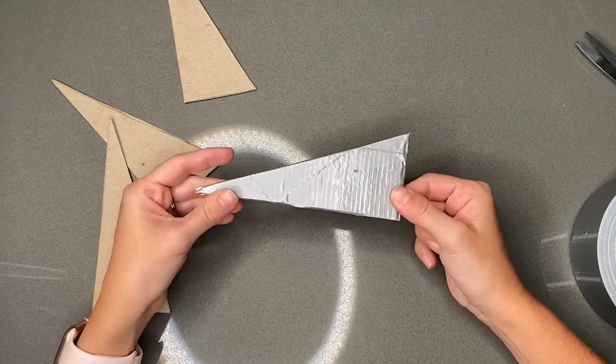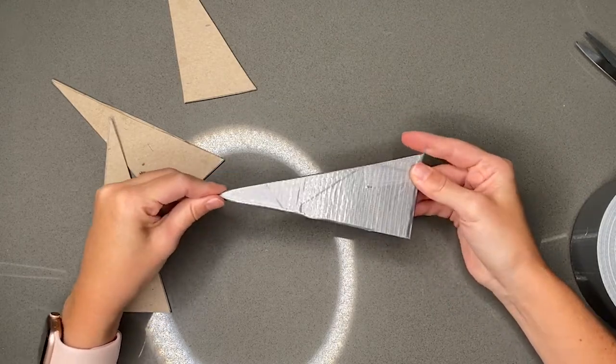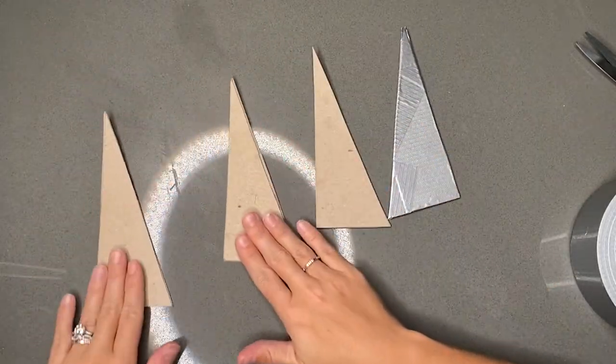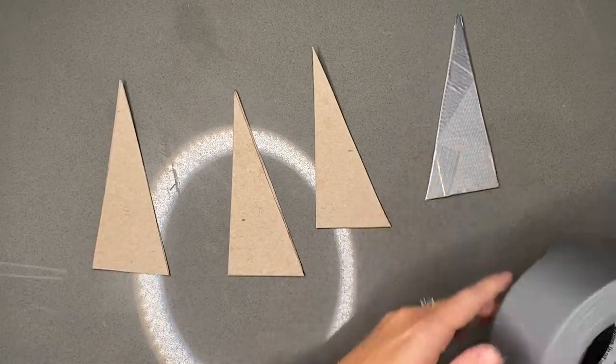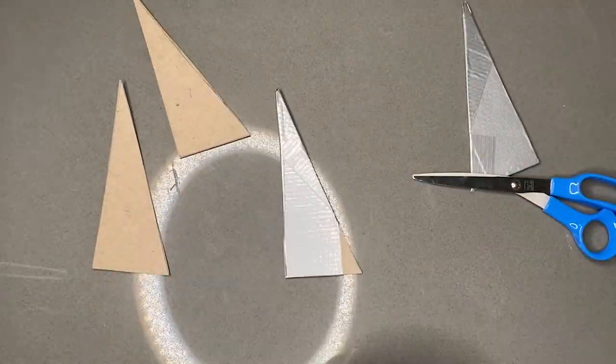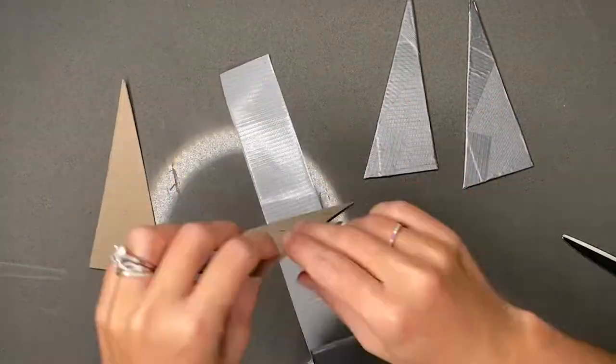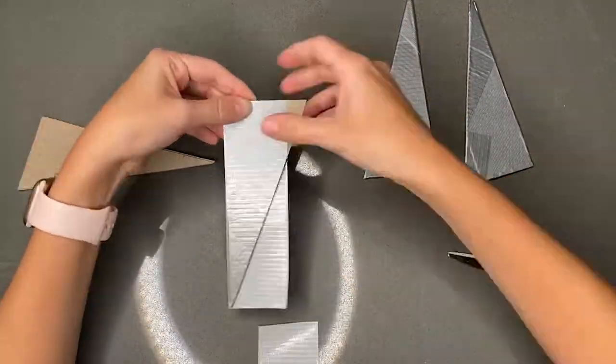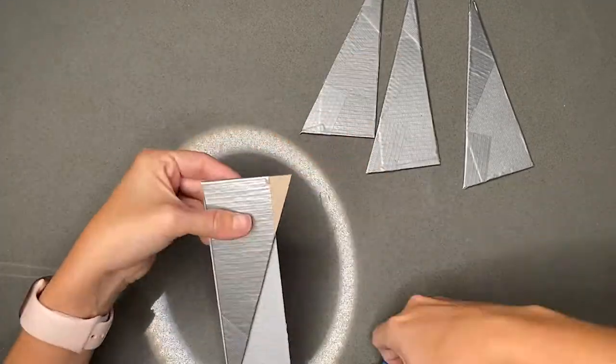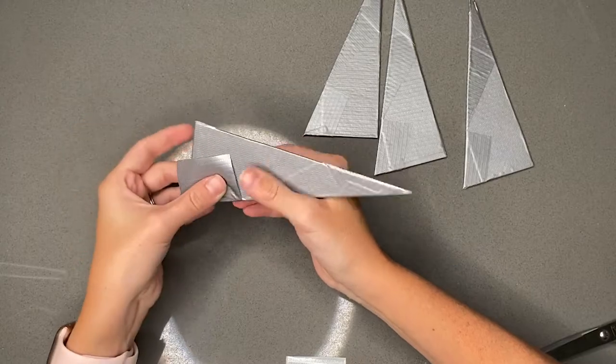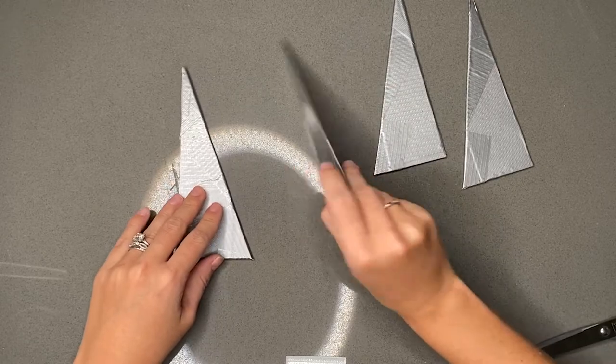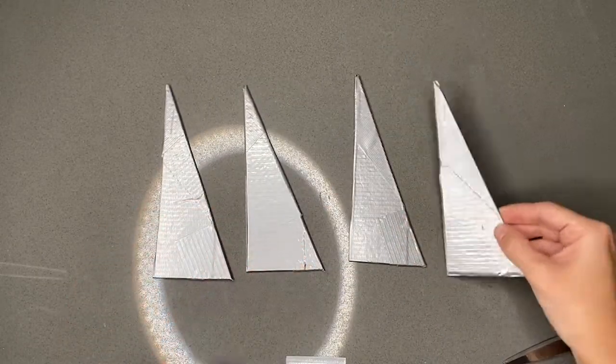So now I have my nice sturdy fin that has two layers of cardstock glued together, and it is laminated with duct tape. I'm going to repeat that for all three of my other fins.